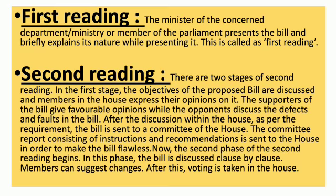Second reading — Stage 1: The objectives of the proposed bill are discussed and members in the house express their opinions on it. The supporters of the bill give favourable opinions while the opponents discuss the defects and faults in the bill. After the discussion, the bill is sent to a committee of the house. The committee report consisting of instructions and recommendations is then sent to the house in order to make the bill flawless.